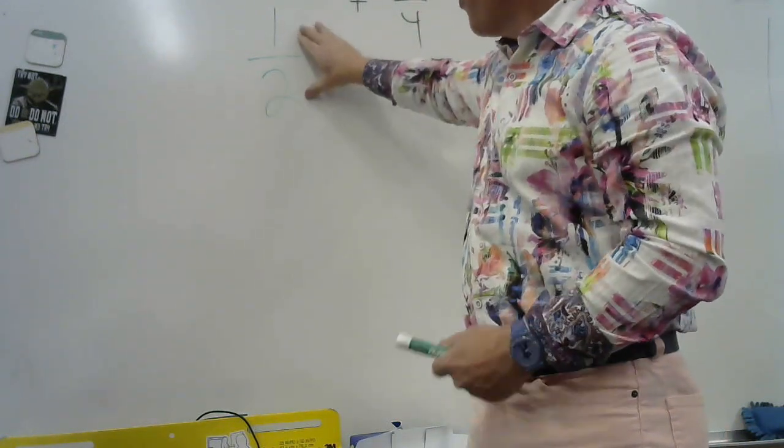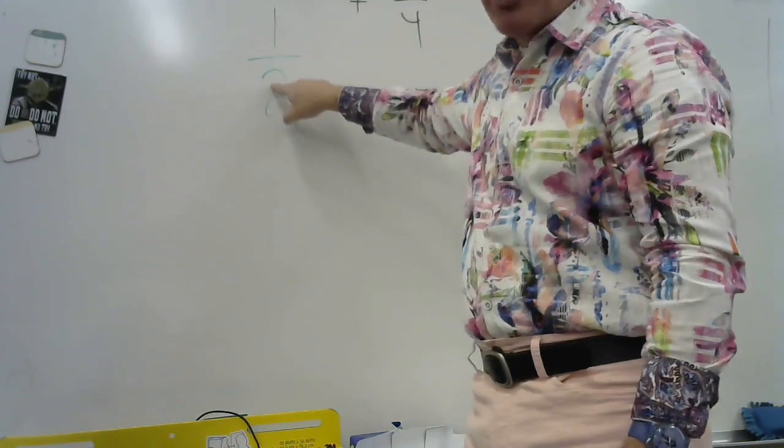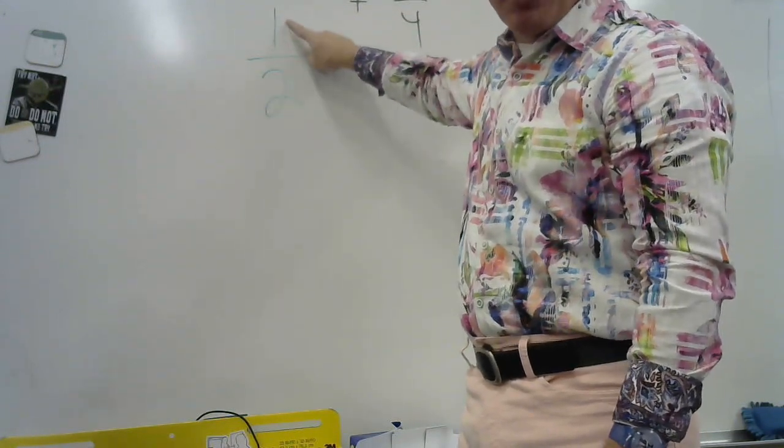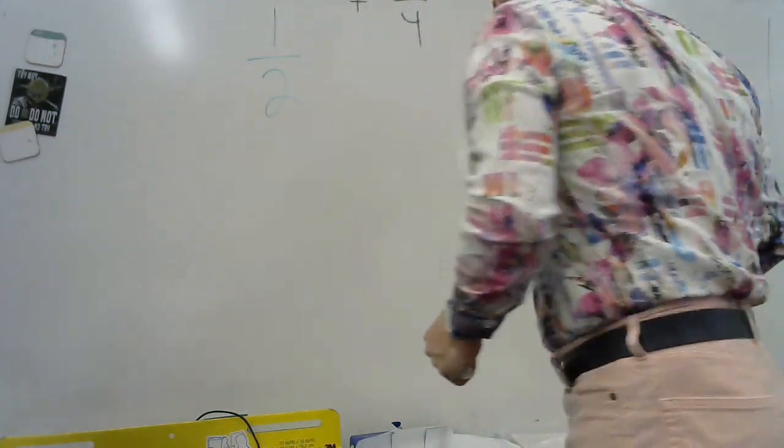So when I look at this fraction right here, I know that I have a whole that's been cut up into two pieces. And the top number, or the numerator, tells me how many of those pieces I have.